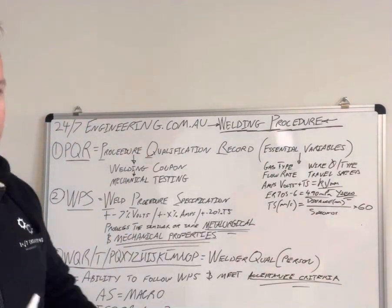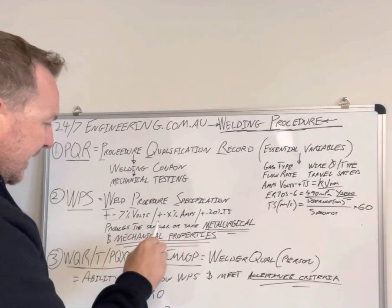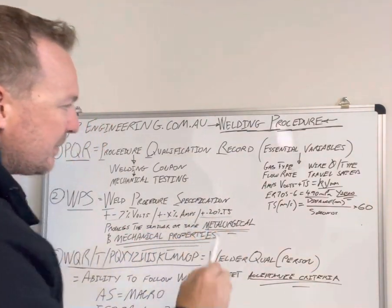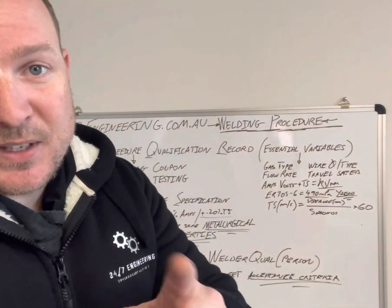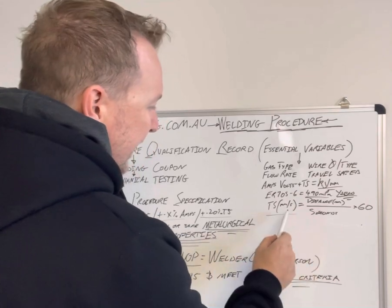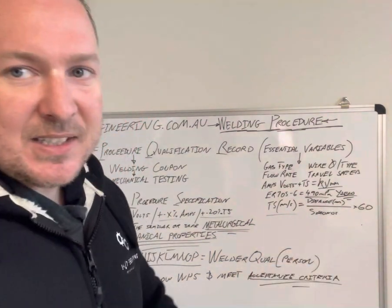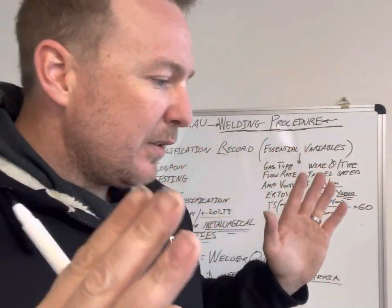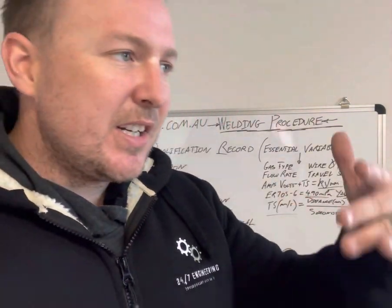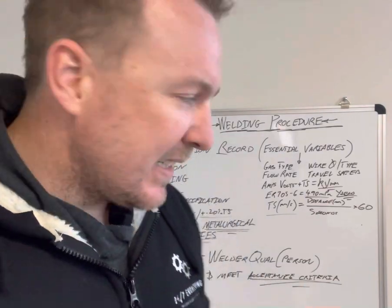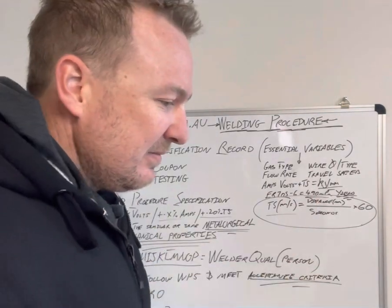It's been proven that plus or minus a certain amount of volts, plus or minus a certain amount of amps, plus or minus a certain amount in your travel speed — which is calculated, by the way. Your travel speed in millimeters per minute is your distance in millimeters divided by seconds, times 60. So if you've welded 400 millimeters in 60 seconds, you divide 400 by 60, then times by 60, giving you 400 millimeters per minute.